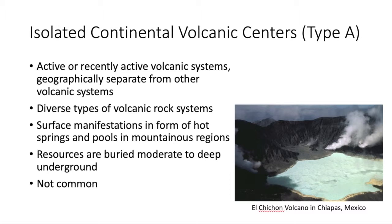The first type of structure is the isolated continental volcanic centers, called Brophy-type A. These are typically active or recently active volcanic systems that are geographically separate from other volcanic systems — meaning they are isolated and not connected in a giant volcanic chain such as Hawaii. They exhibit diverse types of volcanic rock systems, and their surface manifestations come in the form of hot springs and pools in mountainous regions. These resources are usually buried at a moderate to deep level underground and are not too common a source of geothermal energy. The example shown is El Chichón volcano in Mexico, with obvious surface manifestations such as steam geysers and hot springs.